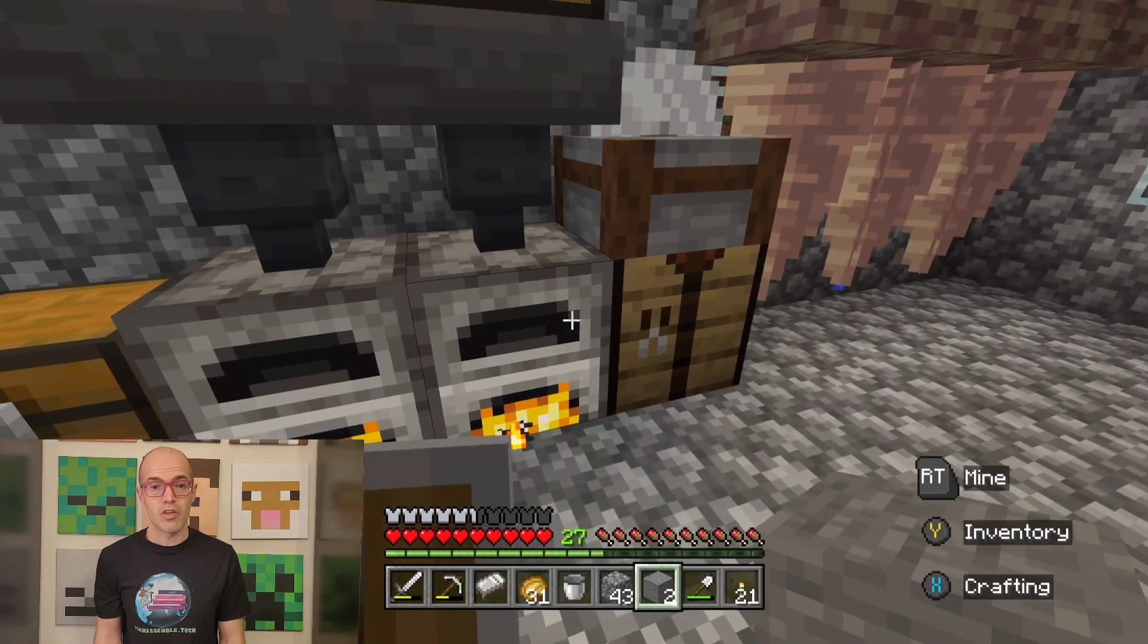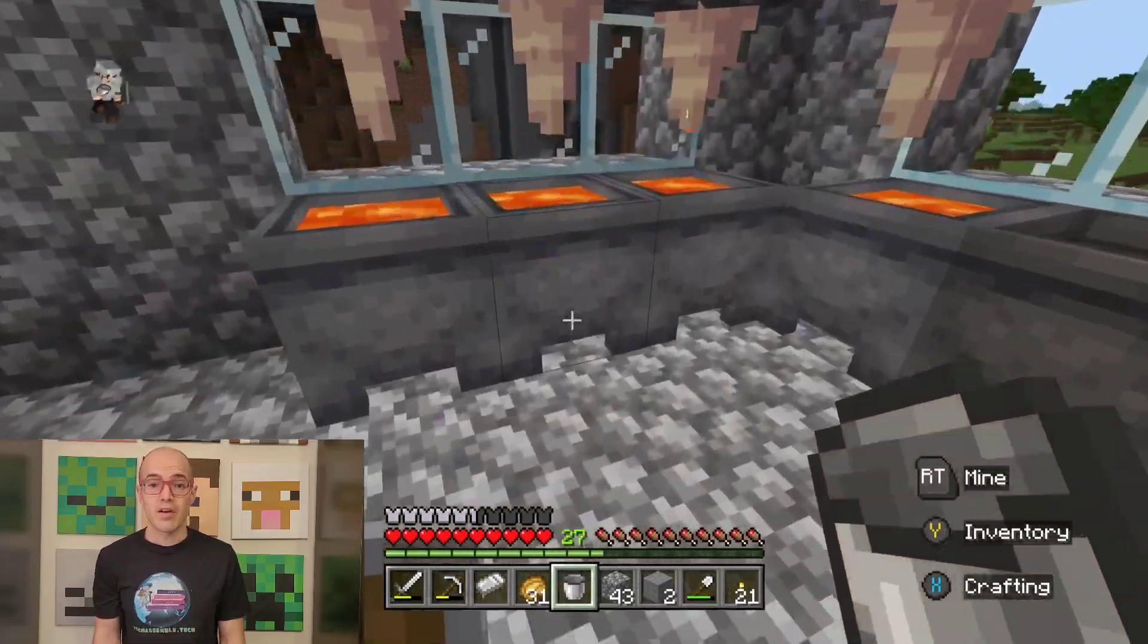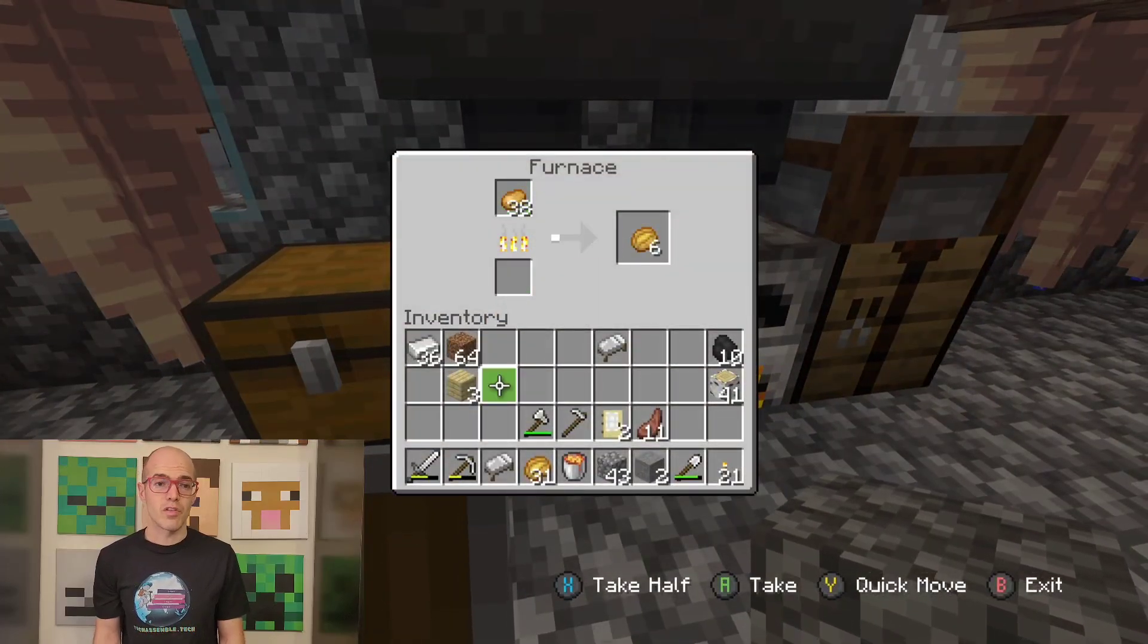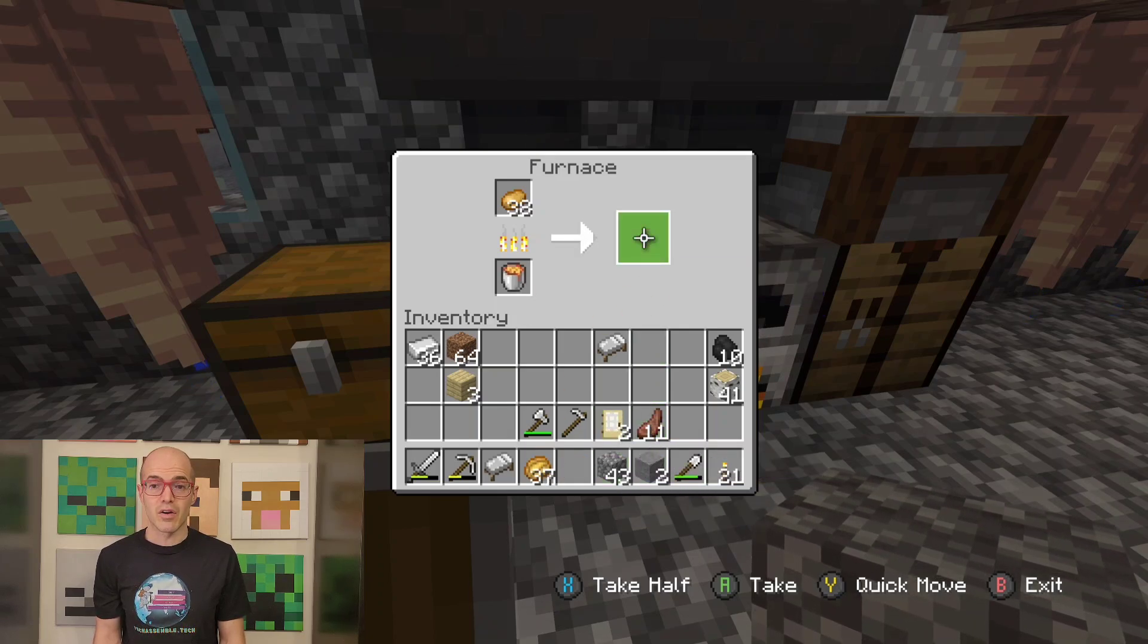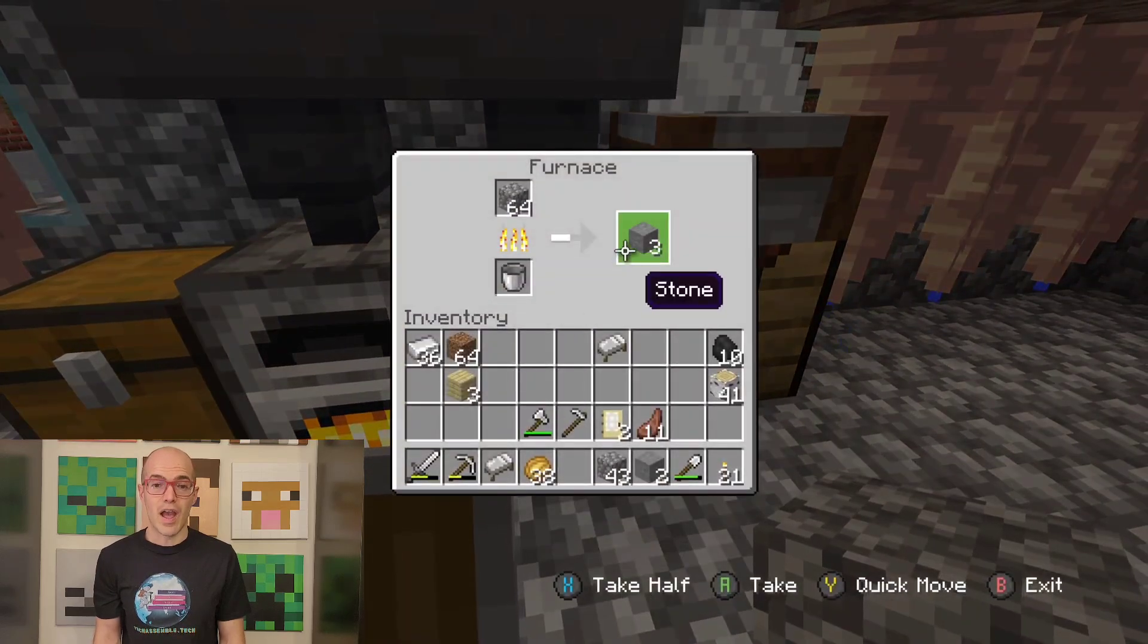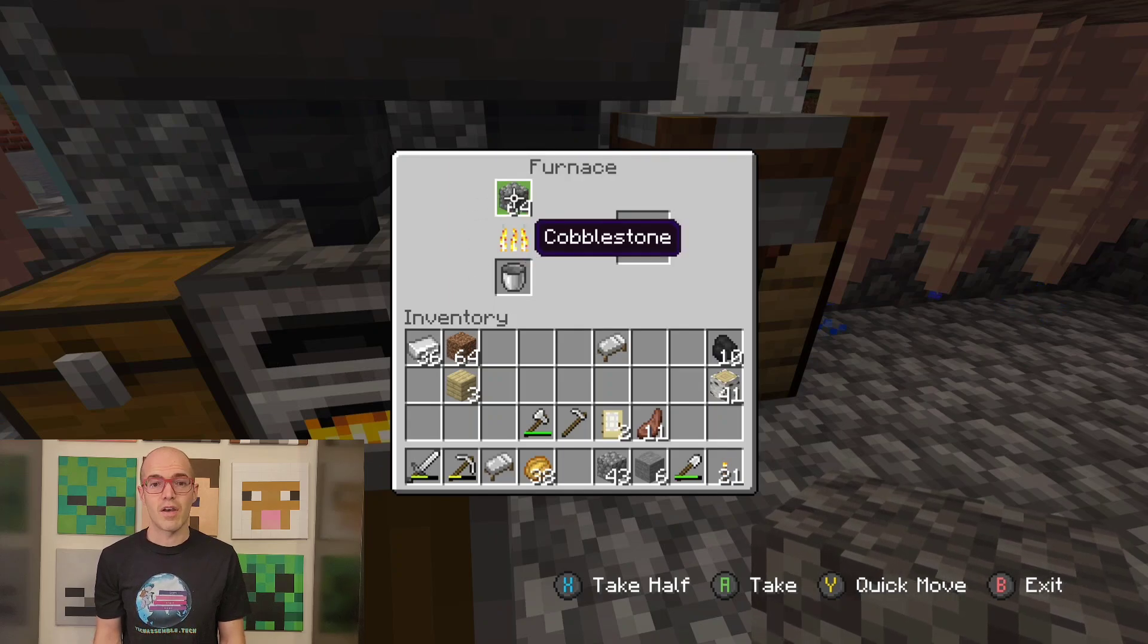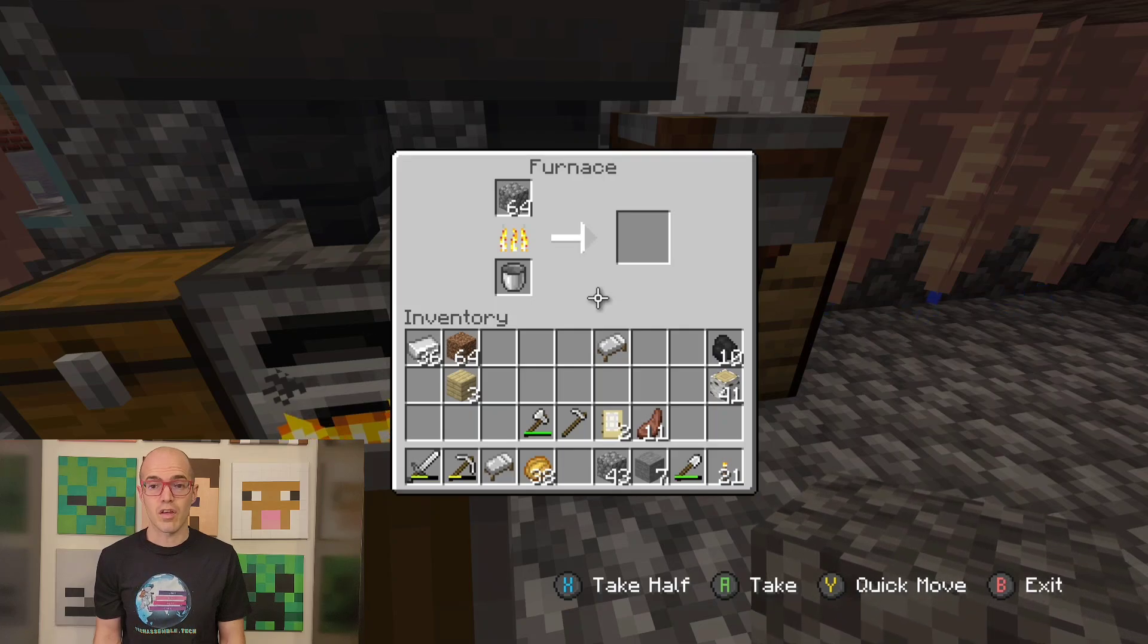In the sandbox simulation game Minecraft, neutrons are indirectly represented through the mechanics of crafting and resource gathering. Players navigate a blocky world filled with various materials, including ore such as iron and cobblestone. When mining for these resources, players encounter blocks representing atomic elements. For instance, mining iron ore blocks represents the extraction of iron atoms from the environment. Neutrons' role in maintaining the stability of these atoms is implicit in the game's mechanics, as they contribute to the cohesion of atomic nuclei. Additionally, in-game crafting recipes for items like iron ingots and stone simulate the utilization of neutrons in processes such as smelting, showcasing their importance in virtual environments.